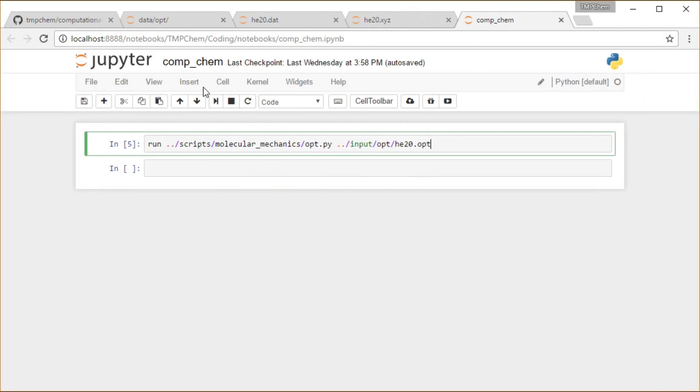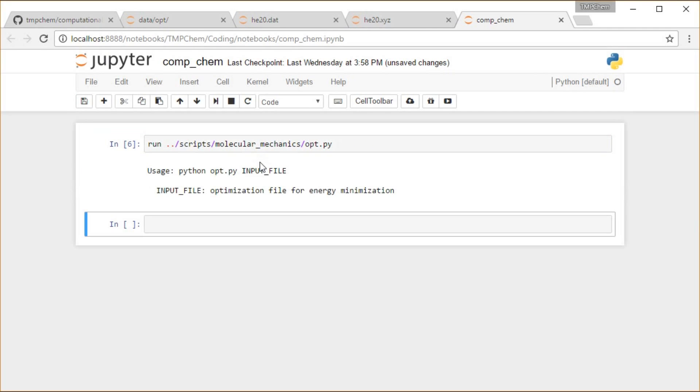So in the notebook directory, I'm running this script, molecular mechanics opt.py, where once again, as in every case, if I run it without any arguments, it wants an optimization file for energy minimization.